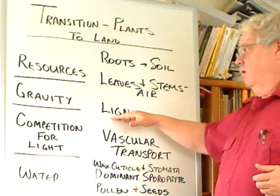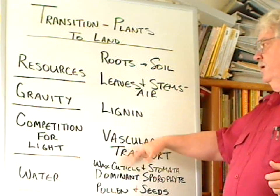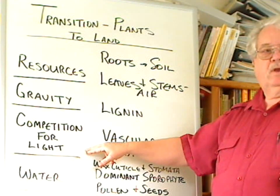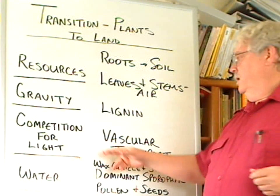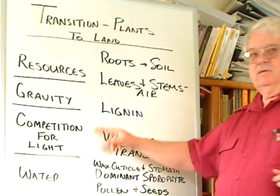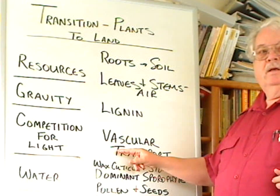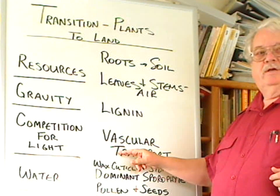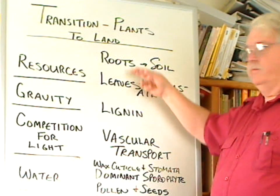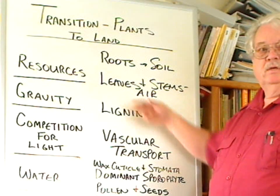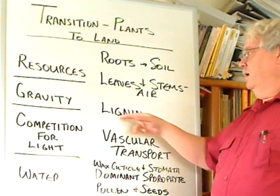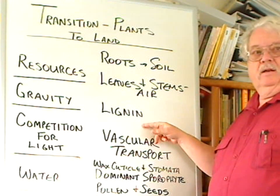This, along with several other things, helps in the competition for light. The vascular transport system, especially, makes the connection for food and water back and forth between the roots and leaves, and this is supported by lignin.